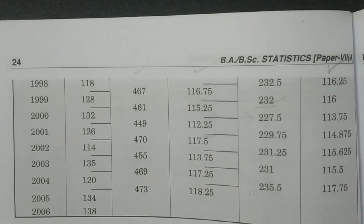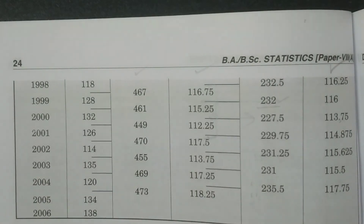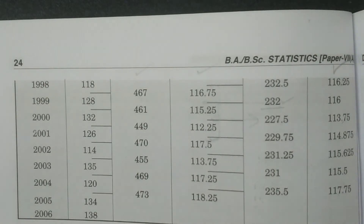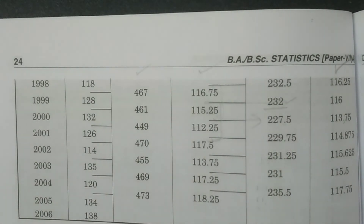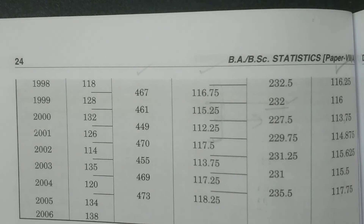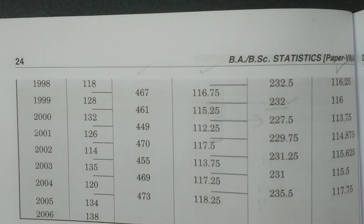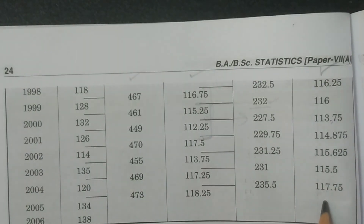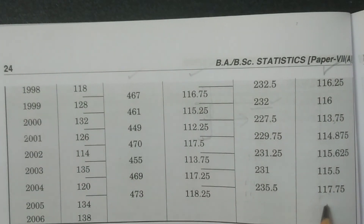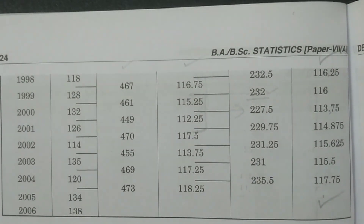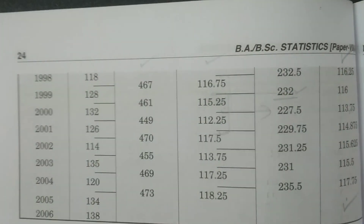This is how we calculate four-year moving averages where the time period is even. When the time period is even, first calculate the non-centered values, then convert them to centered values by averaging consecutive pairs. The final column gives the four-year moving averages, which are centered. I hope you understand. Thank you so much.